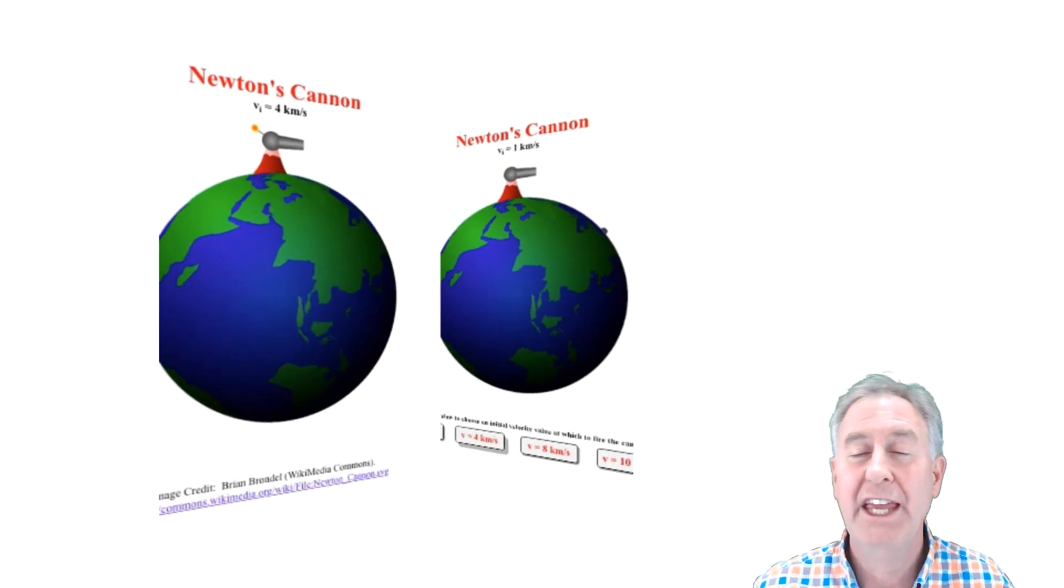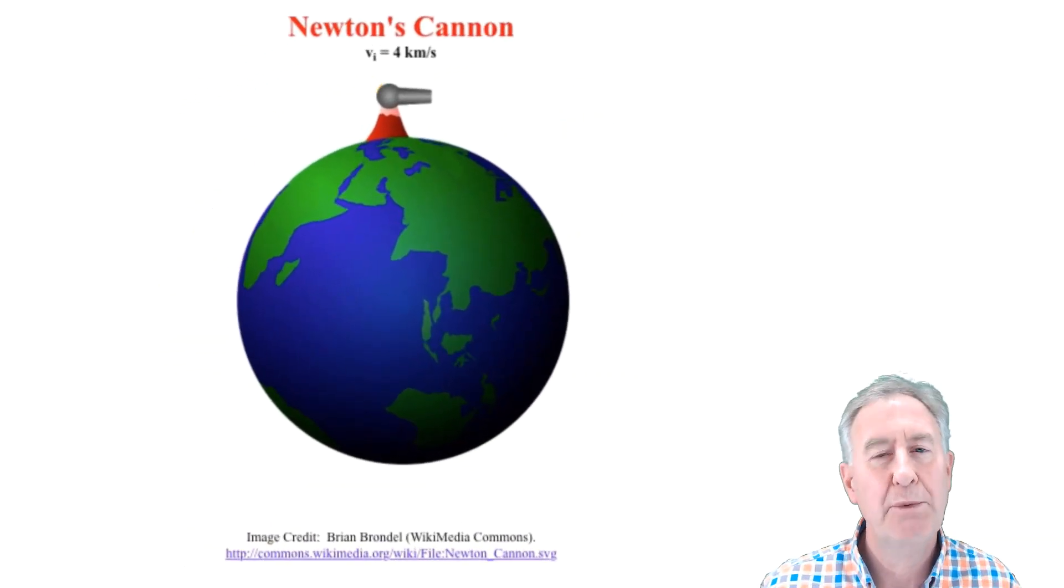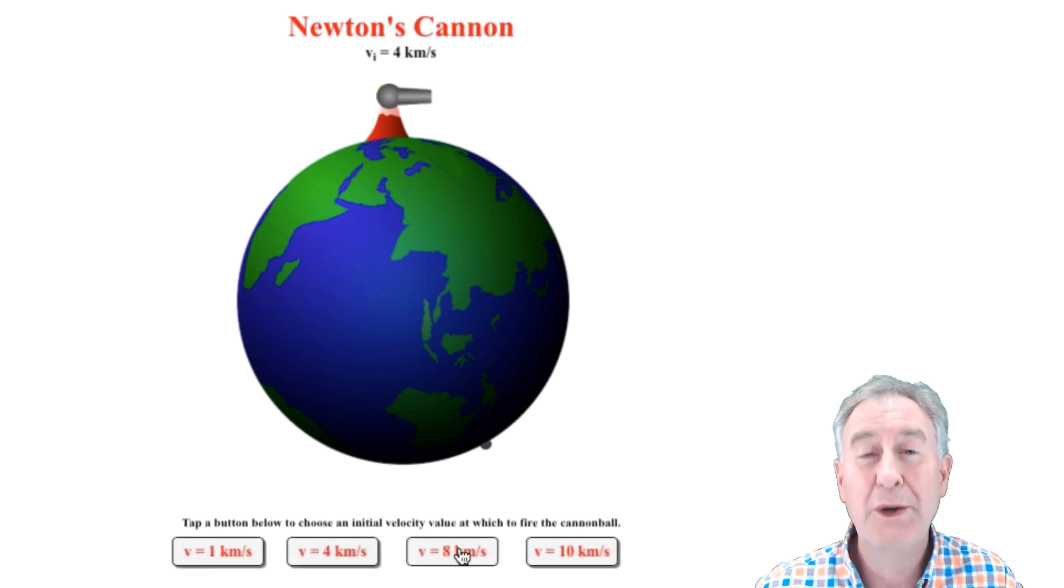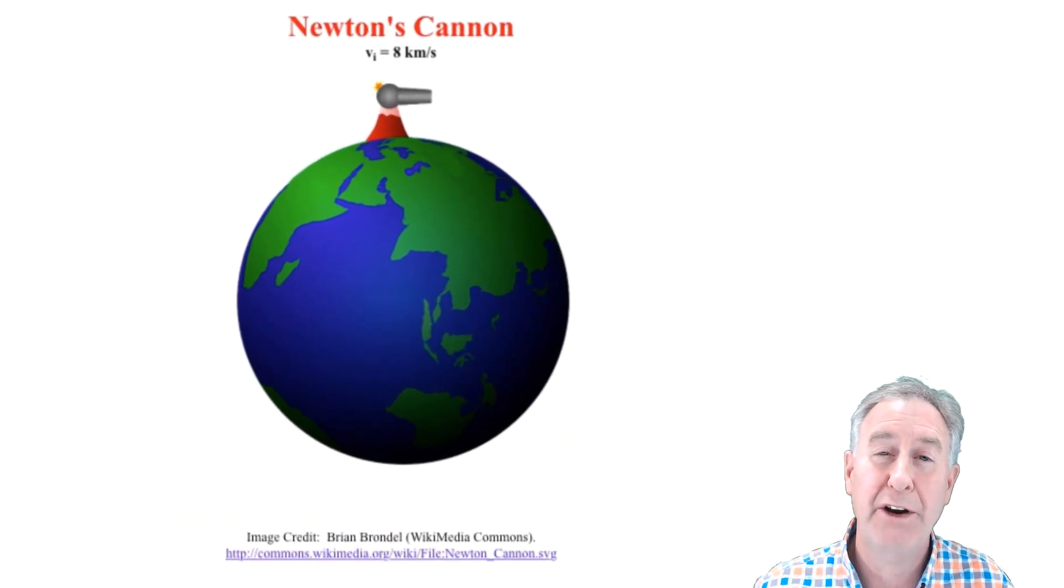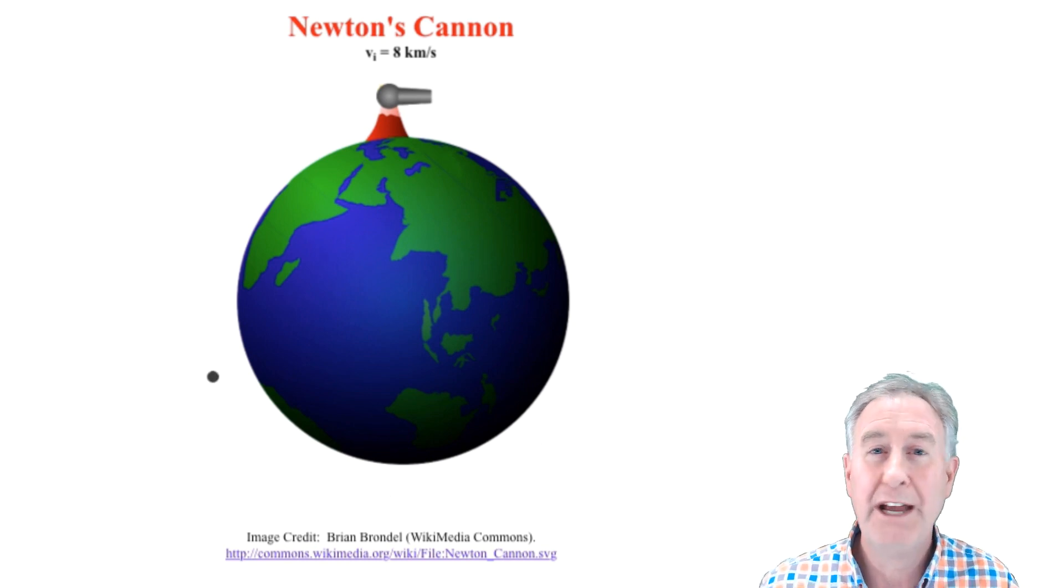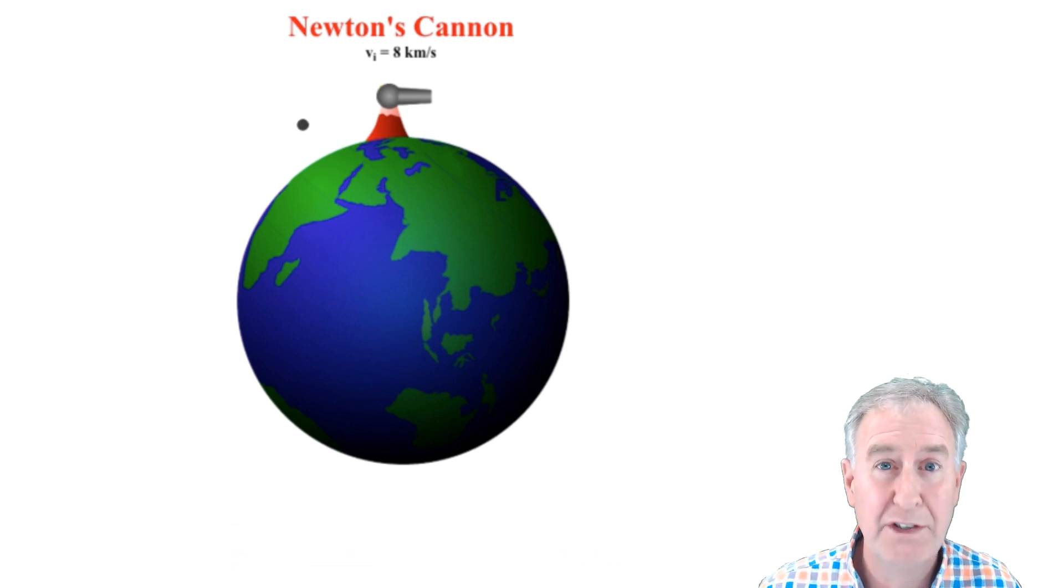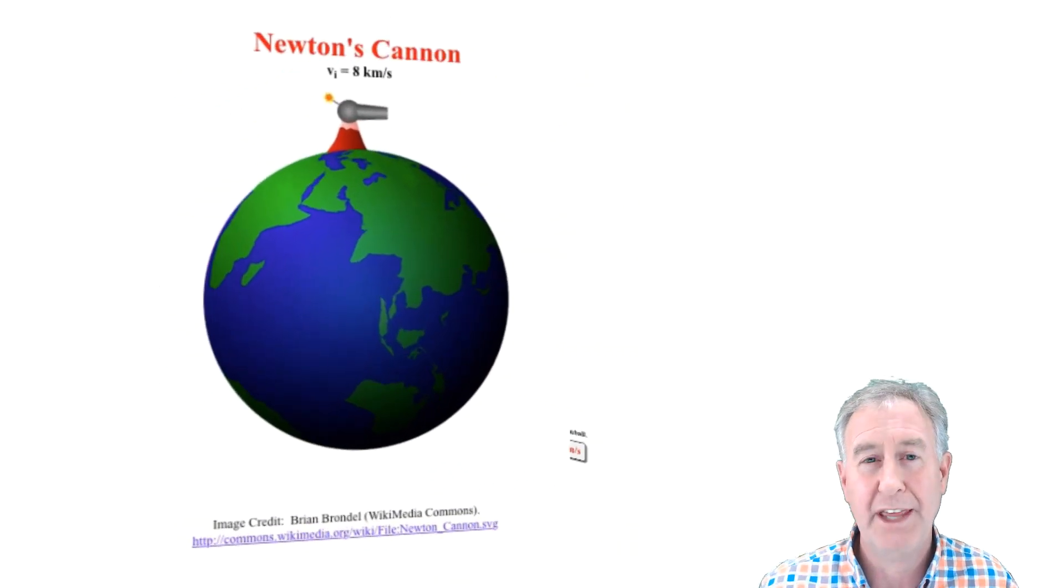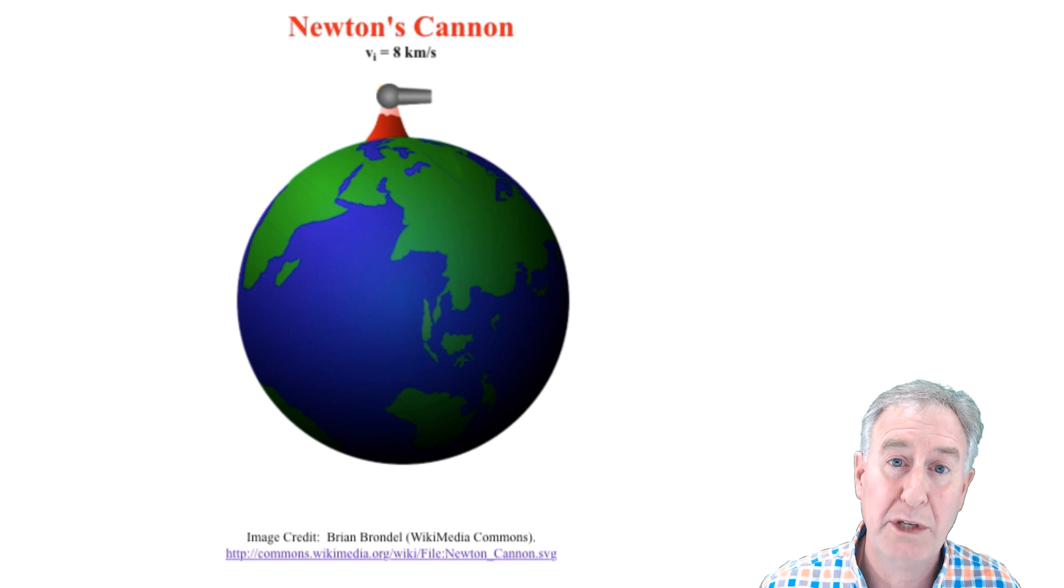But if one fired the cannonball a little faster, it would still fall to earth, but travel further before it finally landed on earth. One could imagine a speed at which you'd fire the cannonball, such that instead of falling into the earth, it would fall towards the earth, but never change its height above the surface of the earth. For an object launched from Newton's Mountain, that speed would be 8,000 meters per second.